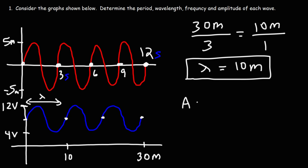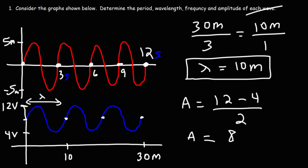Now we can calculate the amplitude for the blue wave. The y-axis shows voltage. The maximum voltage is 12 and the minimum is 4. So the amplitude is (12 - 4) / 2 = 8 / 2 = 4 volts.